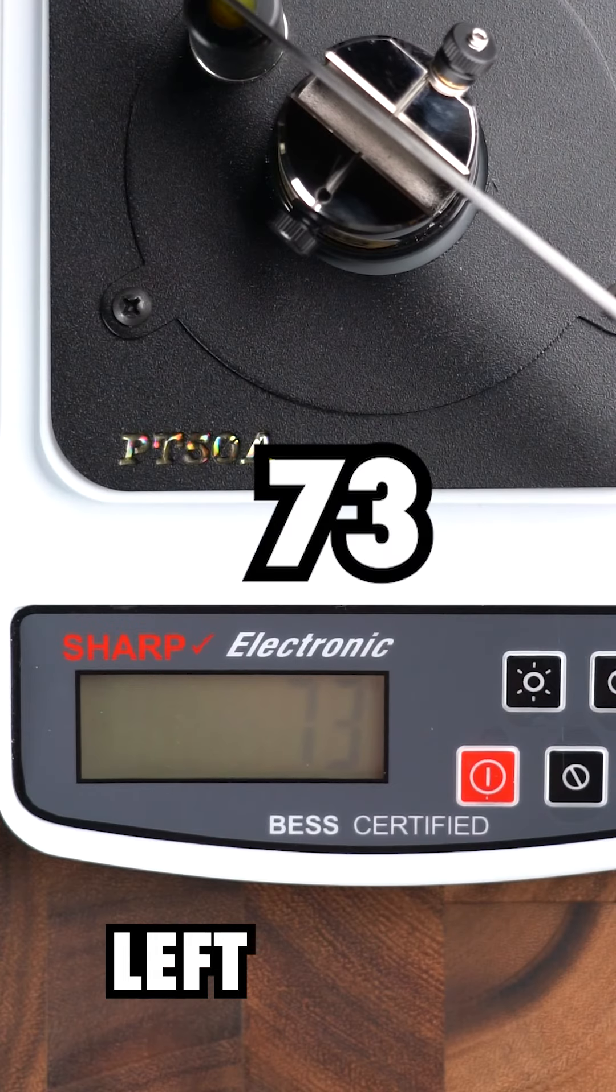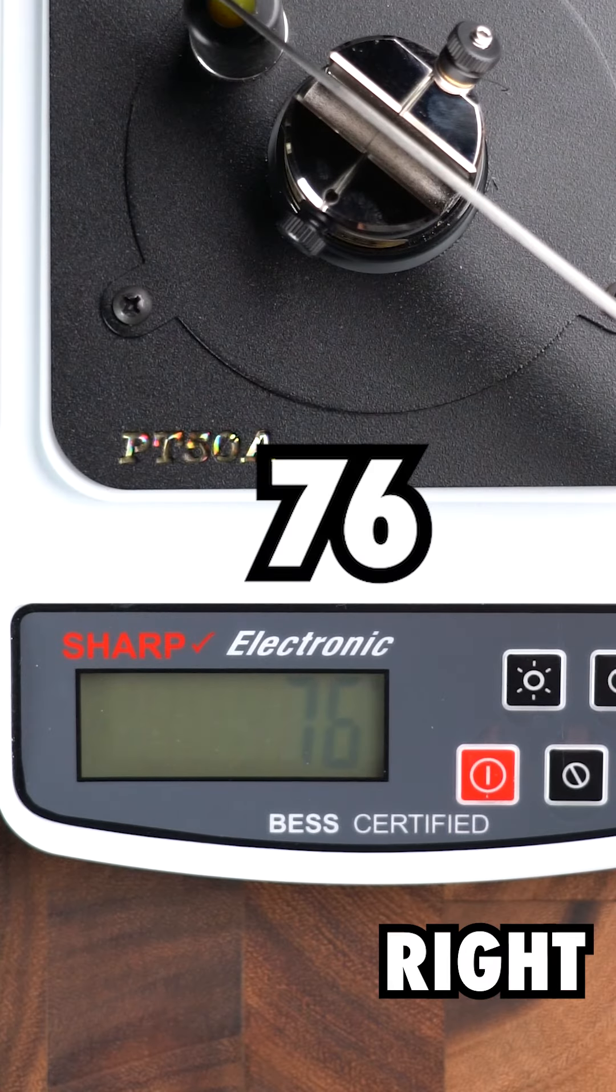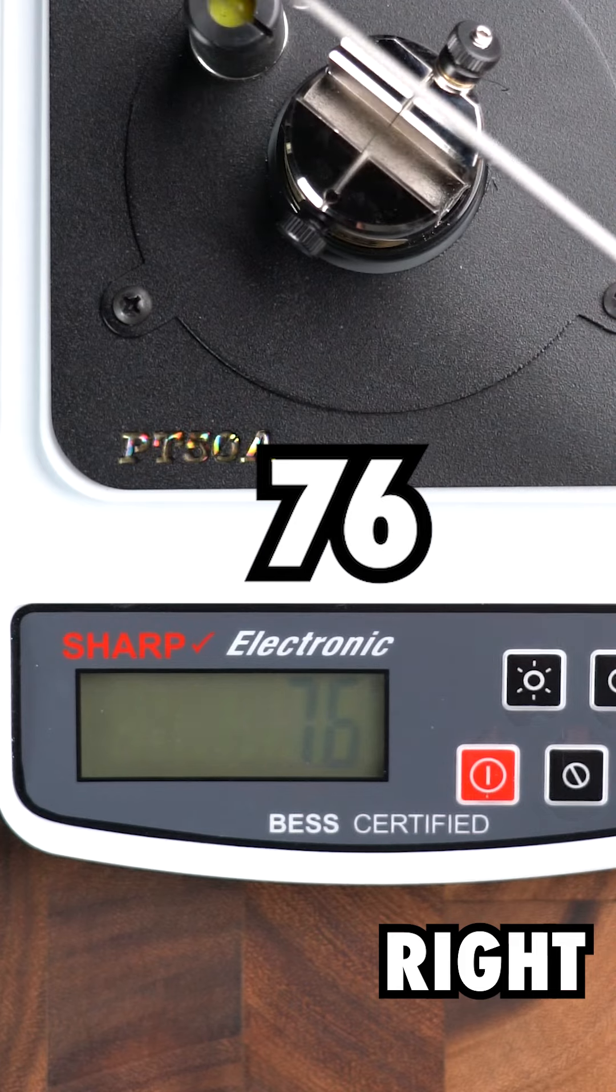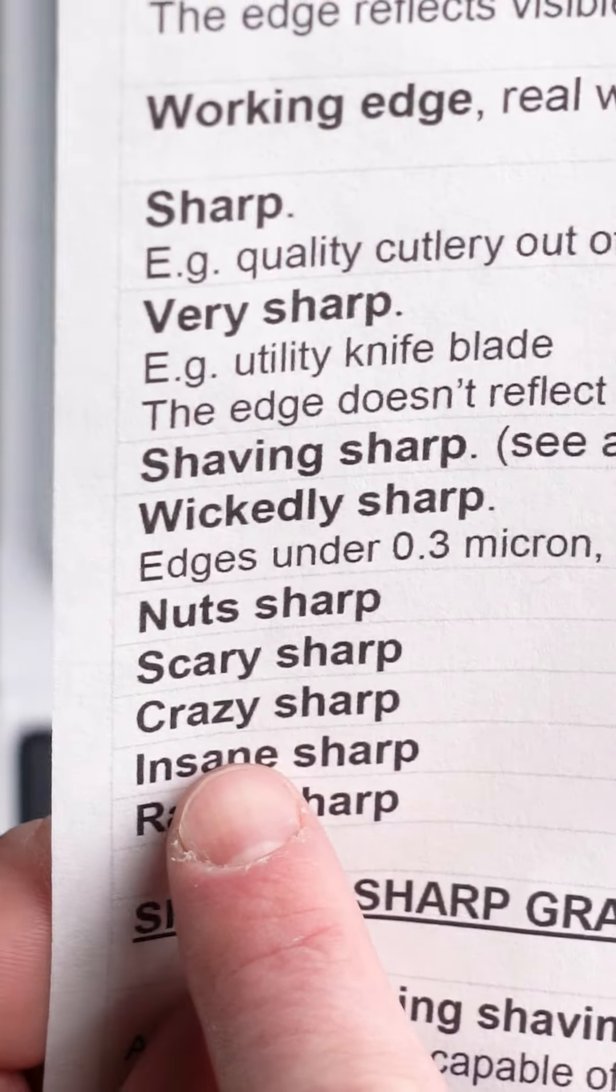Let's start with the one on the left. 73. And now for the other one, 76. So they're at a similar starting point and are already pretty sharp, landing in the insanely sharp category.